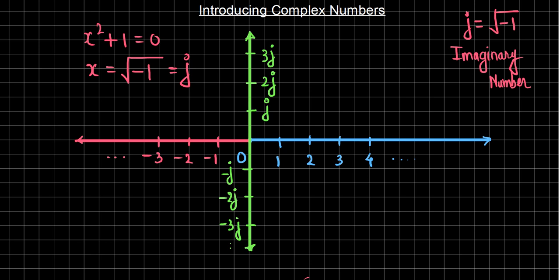Now that will actually facilitate us to represent or to plot such numbers where this root of negative numbers exists. Now we are comfortable to represent these new numbers. Now let's suppose you want to plot the number J — you can easily represent that number onto this axis. Now let's carefully observe this representation. This representation has numbers on a real line, and also numbers represented on the vertical axis. We are naming that axis as an imaginary axis, or the axis that is holding the imaginary number that we have recently obtained.